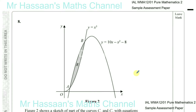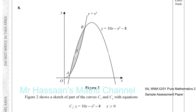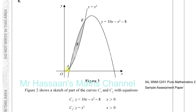Question number 8 from the sample assessment paper of P2 for the International A-Level exam. Here we have a graph, a sketch of part of the curves C1 and C2. C1 is y equals 10x minus x squared minus 8, and C2 is y equals x cubed. Both are drawn for where x is greater than 0.